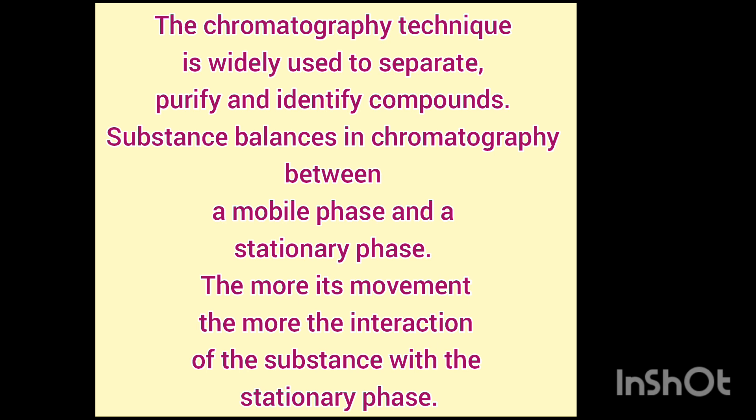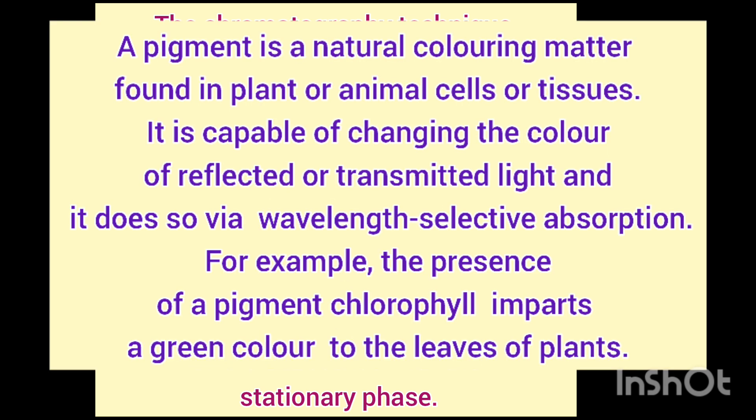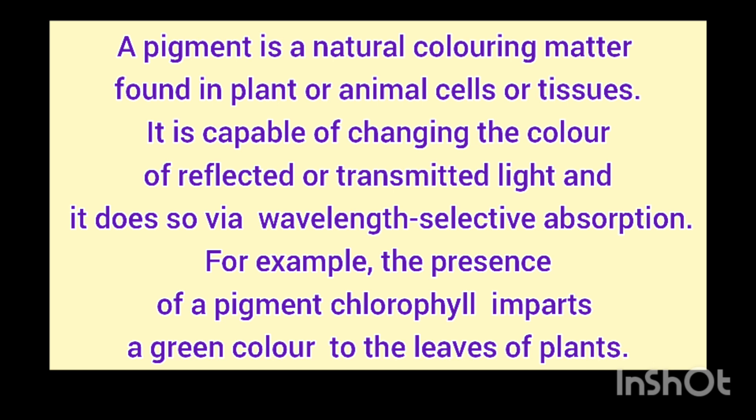We use paper chromatography to identify different pigments present in the leaves of plants. A pigment is a natural coloring matter present in plant or animal cells or tissue. They are capable of changing the colors of reflected or transmitted light by absorbing different wavelengths — for example, the presence of different colors in the leaves or flowers of a plant.